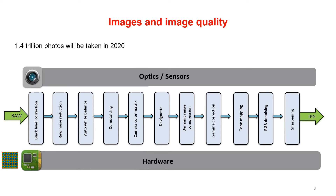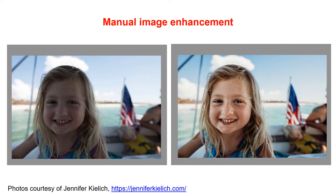Modern smartphones, for example, provide sophisticated image signal processor pipelines to produce images with good contrast, detail, colors, and dynamic range, while at the same time mitigating against degradations. However, despite great advances in imaging hardware and ISP pipelines, there remains substantial room for improvement.